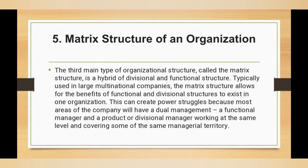The fifth is the matrix organizational structure. Matrix is basically a combination — a hybrid structure. A hybrid structure combines two basic structures: the divisional structure and the functional structure. This is suitable for large multinational organizations. The matrix structure allows the benefits of both functional and divisional structures to exist in one organization. However, this can create power struggles because most areas of a company will have dual management — a functional manager and a product or divisional manager working at the same level, covering the same managerial territory.